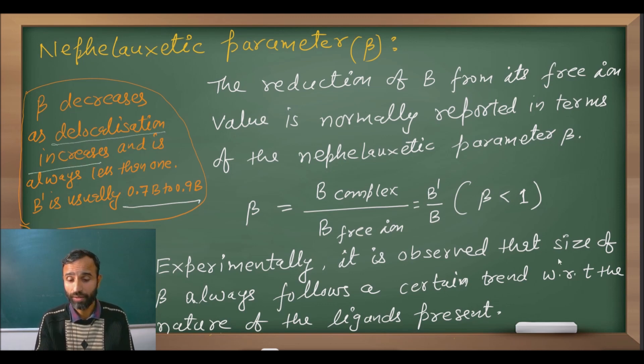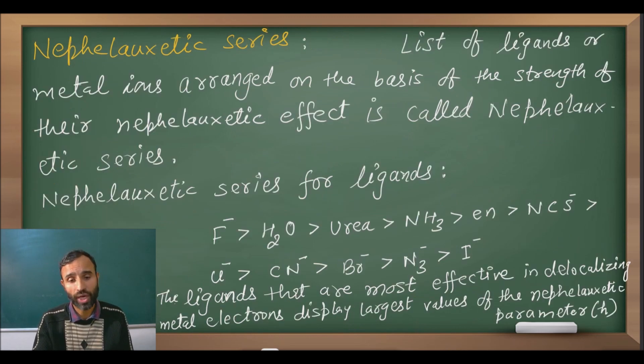Experimentally, the size of beta or value of beta always follows a certain trend with respect to nature of the ligands present. It also depends upon the nature of the metal and its charge. So see nepheloxetic series that is very very important. In competitive exams there is always a question from nepheloxetic series nowadays. So the list of ligands or metal ions when they are arranged on the basis of the strength of the nepheloxetic effect, that is called nepheloxetic series.